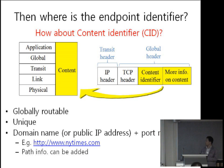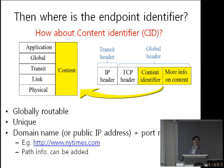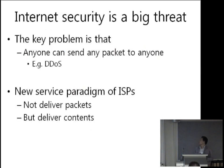I propose to use domain name, or public IP address and port number, or its indicator as the content identifier. For instance, an HTTP URI can be a good content identifier — it's globally routable and unique. Some path information can also be added. That's the reduced role of IP address, and the additional requirement to add a content identifier.